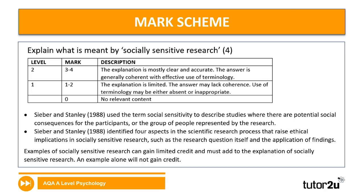Consider how Bowlby's research might be used — for example, to justify women staying at home and not going out to work, because his theory stated the importance of the mother in that critical period in the first few years. At the top level — three to four marks — your explanation needs to be mostly clear, accurate, and coherent with effective use of terminology. The generic basic definition covers consequences for participants and the group represented by the research, with elaboration such as an example like Bowlby's monotropic theory.